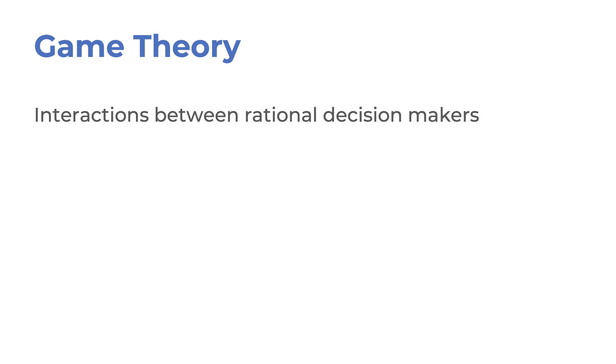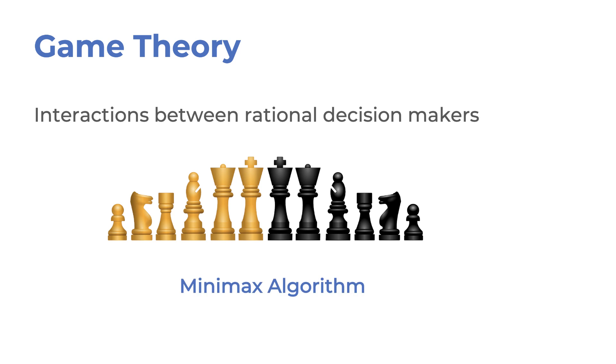How about game theory? It must have something to do with video games, right? Well, not really — or on second thought, it actually is used in some video games. Game theory models interactions between rational decision makers. Therefore, you can use it to model the behavior of non-player characters. For example, to program a chess-playing agent, you can use the minimax algorithm, which minimizes the possible loss for the worst case.